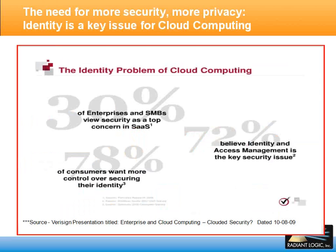A recent poll showed that 30% of enterprises and small to medium sized businesses view security as a top concern in SaaS. 72% believe identity and access management is the key security issue, and 78% of consumers want more control over securing their identity. These numbers tell us that focusing just on security means — strong authentication, digital certificates, encryption, etc. — is not enough. Beyond the security means, there's a huge amount of identity data that must first be addressed. The integration of these identities is the ultimate challenge for the cloud, and here is where identity and context virtualization plays a key role.